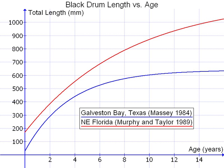Fish measurement is the measuring of the length of individual fish and of various parts of their anatomy. These data are used in many areas of ichthyology, including taxonomy and fisheries biology.